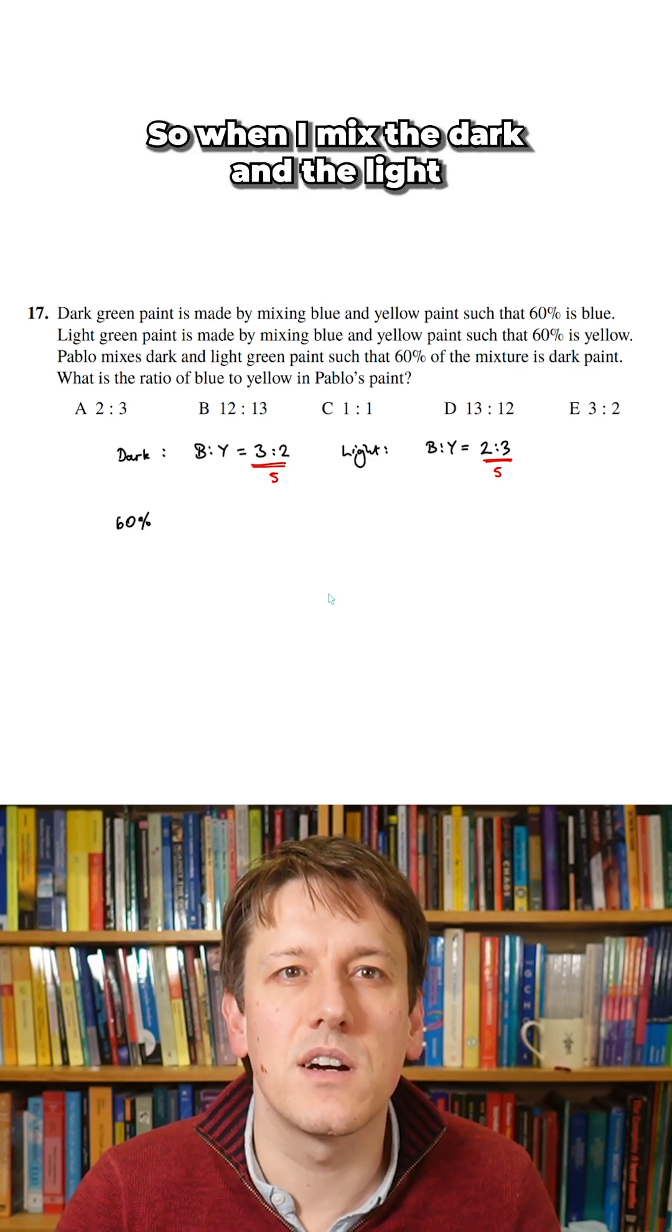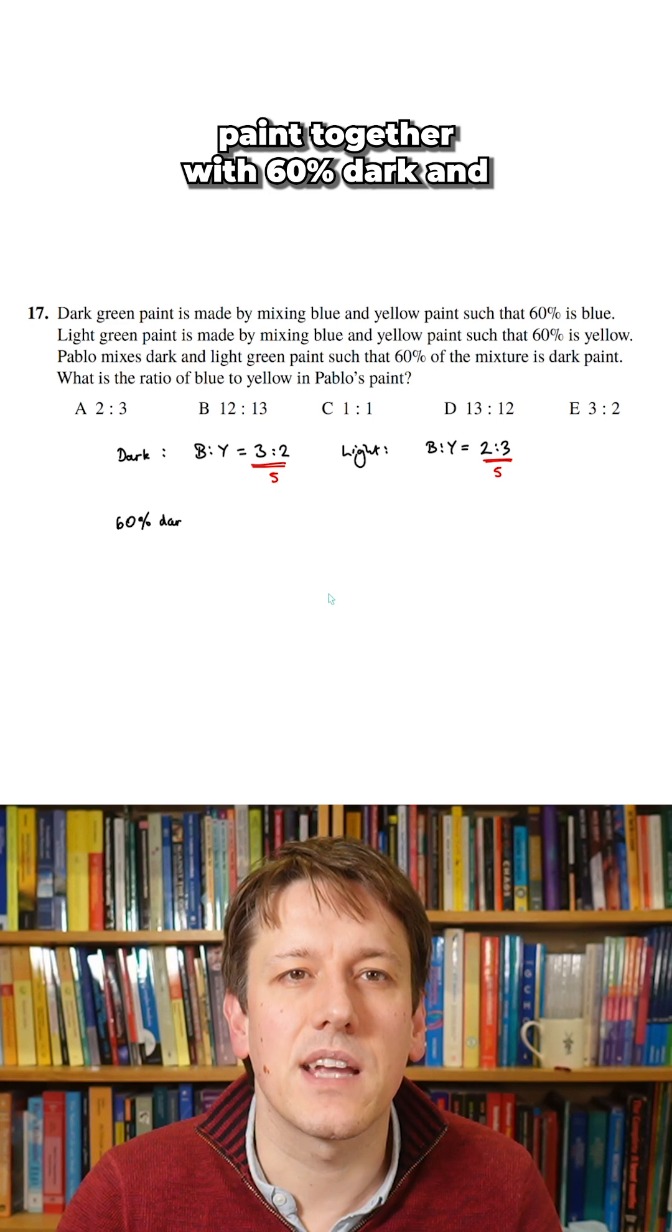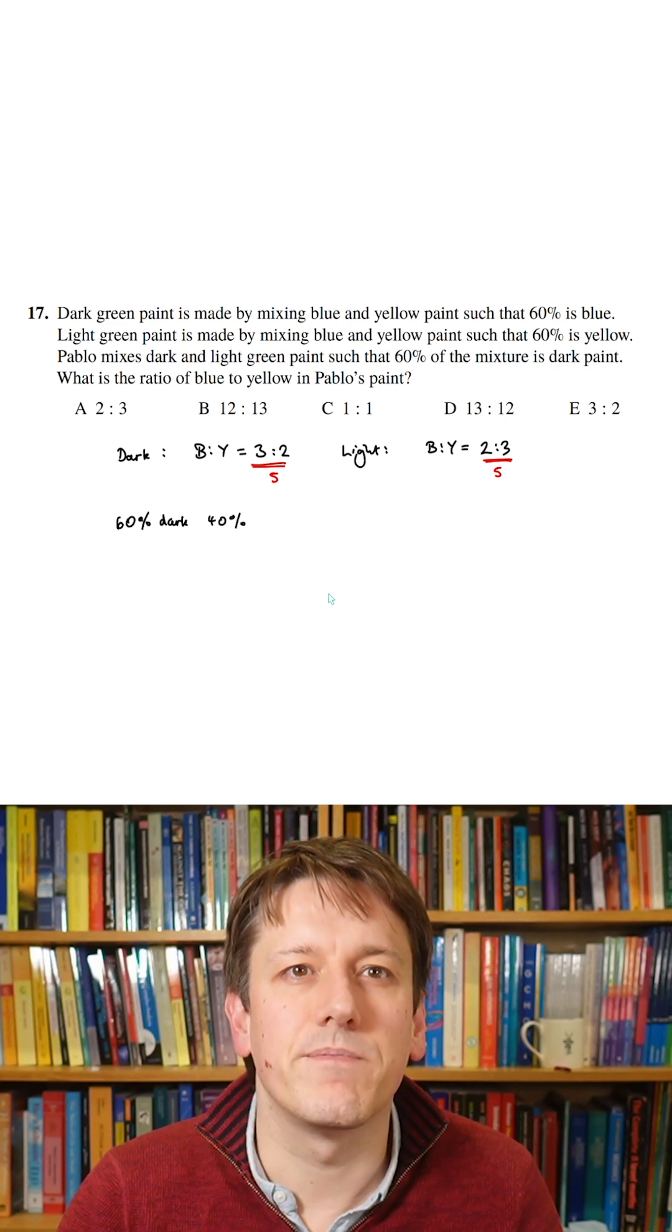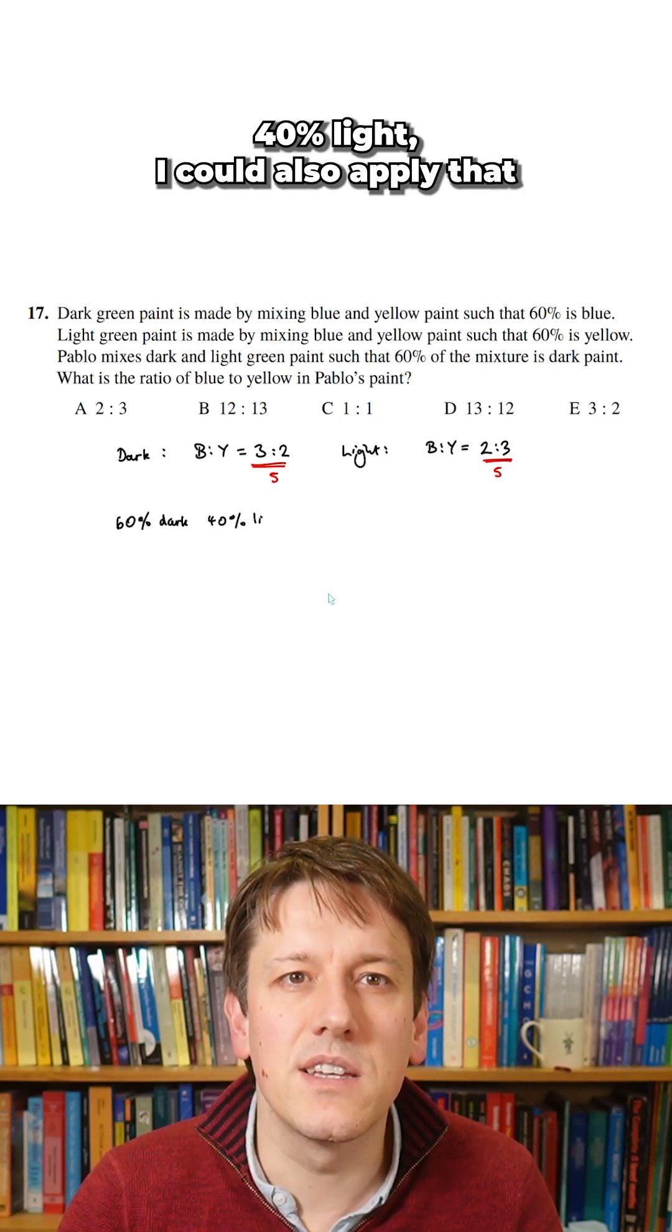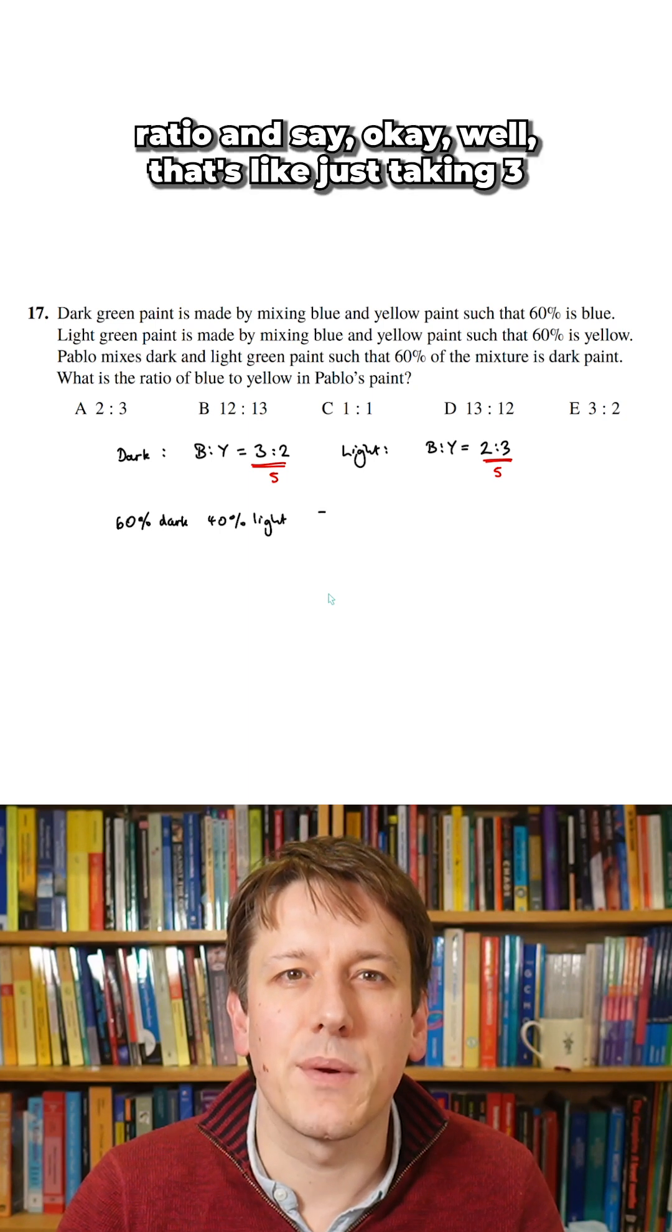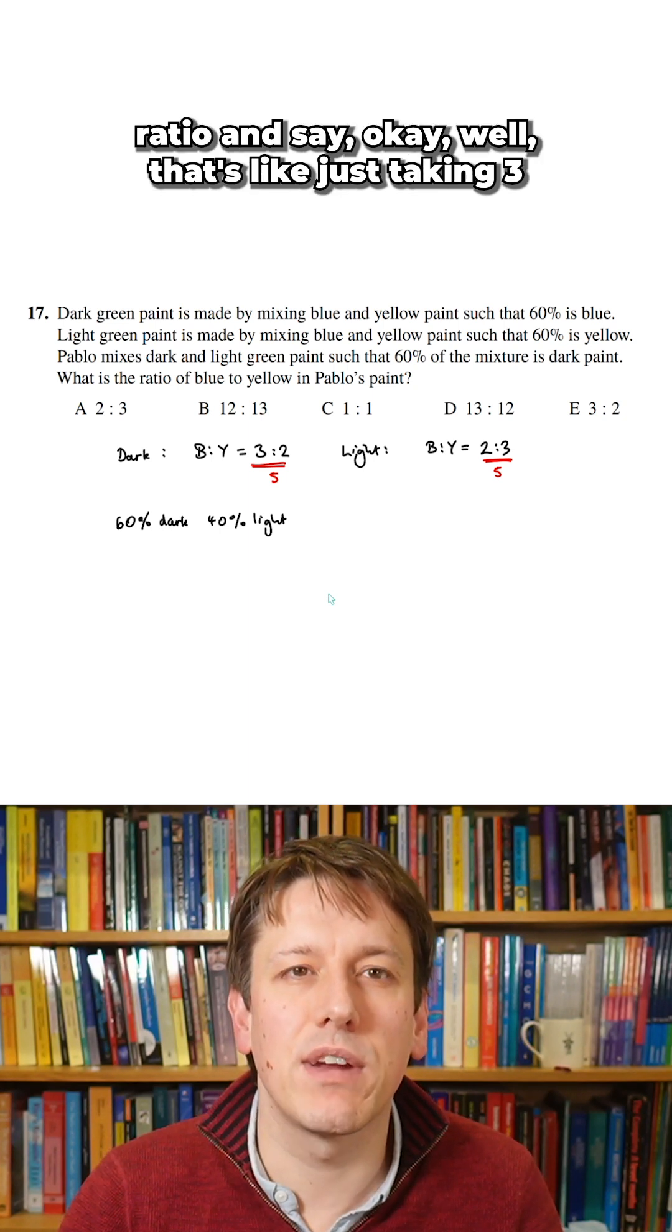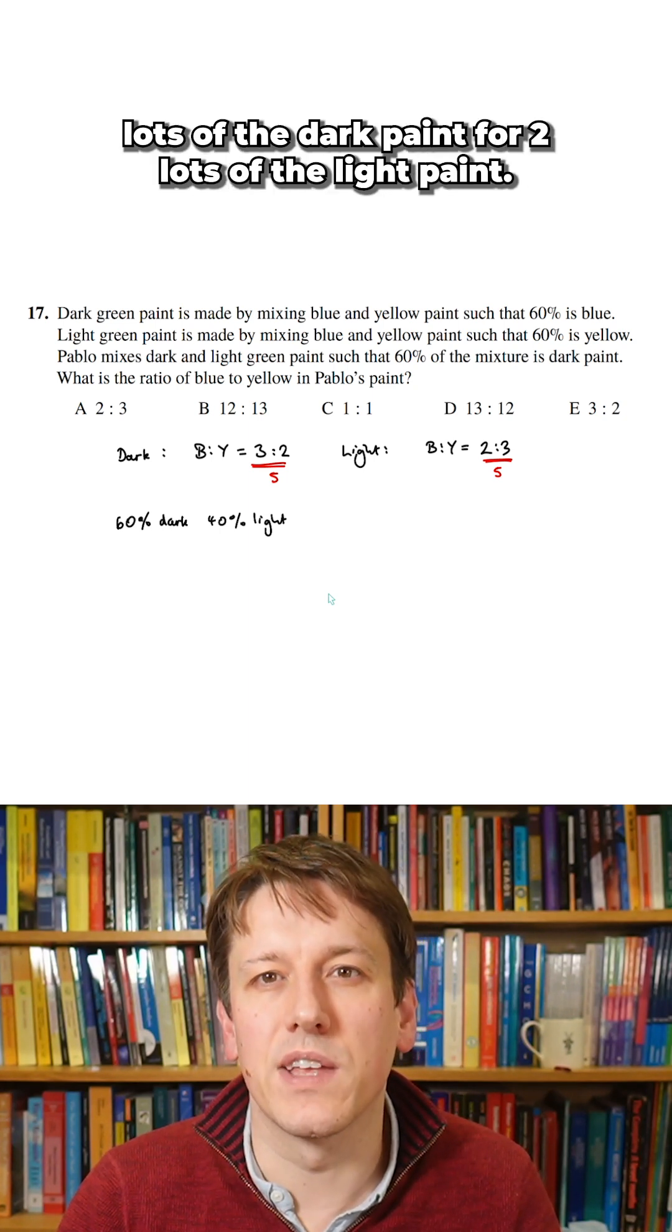So when I mix the dark and the light paint together with 60% dark and 40% light, I could also apply that ratio and say, okay, well that's like just taking 3 lots of the dark paint for 2 lots of the light paint.